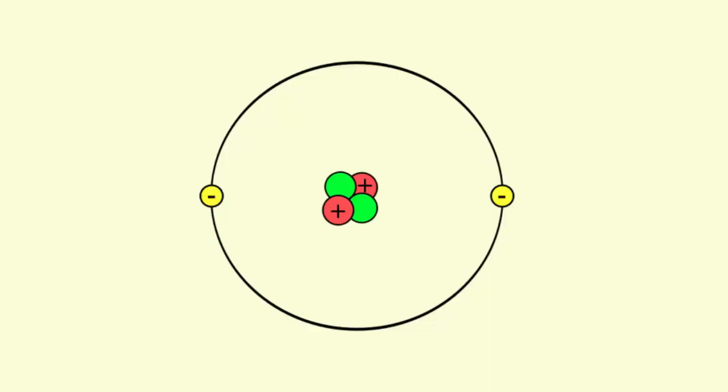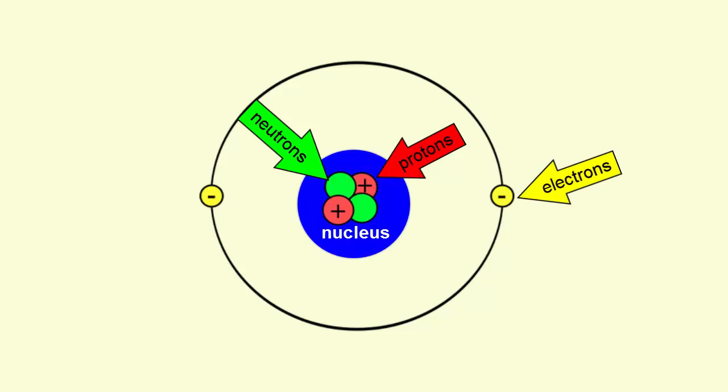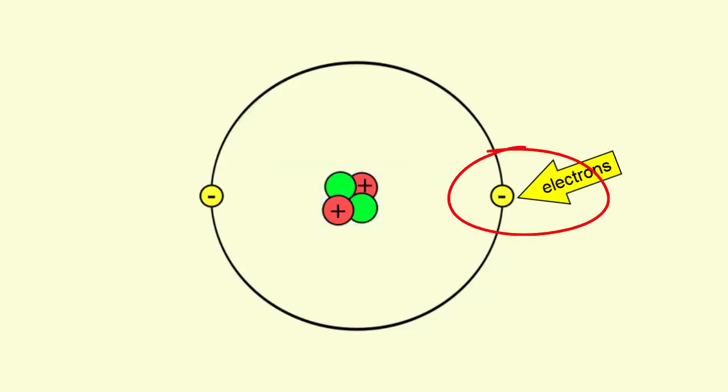All atoms are made up of three subatomic particles—neutrons, protons, and electrons. Neutrons and protons are trapped in the nucleus. They are not involved in the bonds that form between atoms. That role goes to electrons.